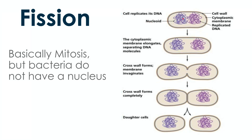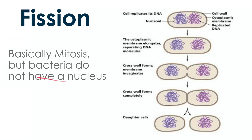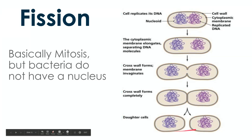Instead of chromosomes, bacteria have one large clump of DNA called the nucleoid. That DNA still replicates, then the copies move to opposite sides and the cell splits in half — similar to telephase and cytokinesis in mitosis. It's essentially mitosis without a nucleus to divide. The result is one parent producing two identical daughter cells.